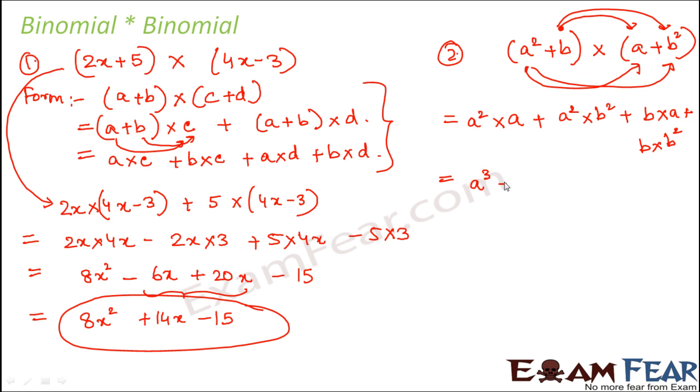We can directly write it as: a² × a plus a² × b² plus b × a plus b × b². Now a² × a would be a³, a² × b² would be a²b², a × b would be ab, and b × b² would be b³. So if you compare all four terms, they do not have any like terms, so this is the final answer.